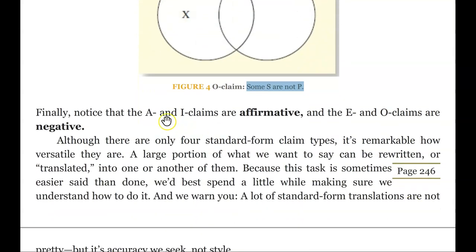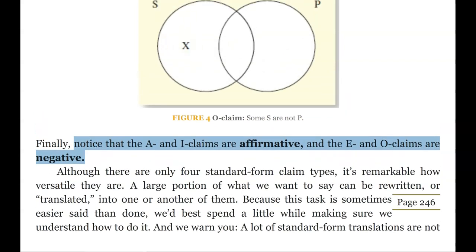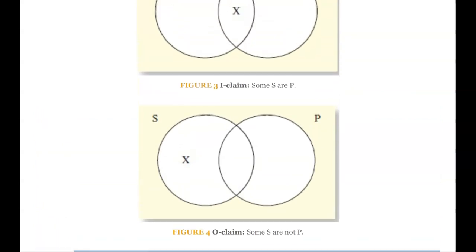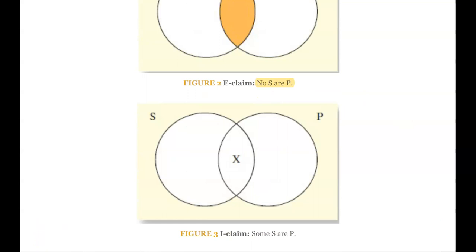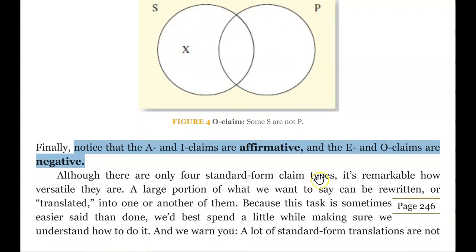It may help you to notice this fundamental difference: A and I type claims are affirmative, and E and O type claims are negative — which is just to say 'not' or 'no.' Negative doesn't mean it's rude or degrading to snakes or anything like that. It just means it says none or not. The things we talked about with regard to what these claims can tell us and what they cannot tell us is crucial — it is of the utmost importance.